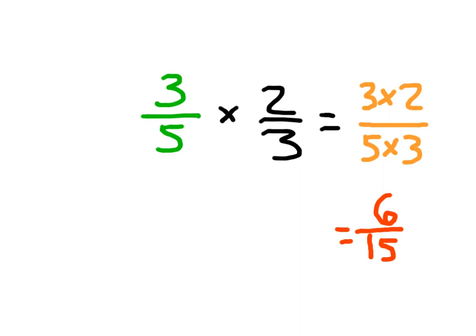The only other thing that we need to do is we need to go ahead and simplify this fraction. So 6 fifteenths, both 6 and 15 are divisible by 3. So 6 divided by 3 is 2, and 15 divided by 3 is 5. So that 3 fifths times 2 thirds is equal to 2 fifths.